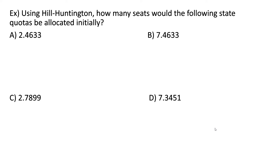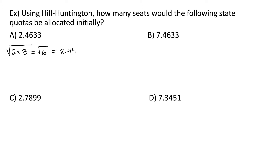Now let's look at an example to figure out how we would round in Hill-Huntington's method based on the geometric mean. Using Hill-Huntington, how many seats would the following state quotas be allocated initially? For 2.46, the geometric mean would be the square root of 2 times 3, or the square root of 6, which is 2.4495.